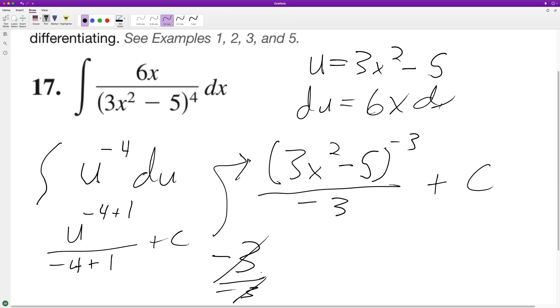Then we take the derivative of the inside which is 6x, and we have 3x squared minus 5, and then subtract 1 from there and we get negative 4. Because that matches up with originally what we had, because we can put this raised to the negative 4 on the bottom, and we end up with what we have here.